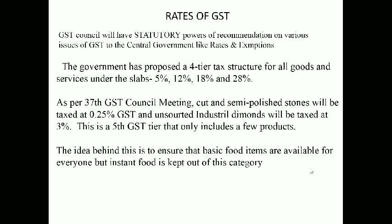Under the GST there is a GST Council which is a statutory body to recommend various issues relating to GST to the central government. The central government has the authority and power to fix the tax rate according to the level of economy of the nation. There is basically a four-tier tax rate for goods and services, and some exempted and zero-rated goods and services. In the 37th GST Council meeting, two more rates were added: 0.25% for unsorted semi-polished stone and 3% for industrial diamonds and unsorted stones.